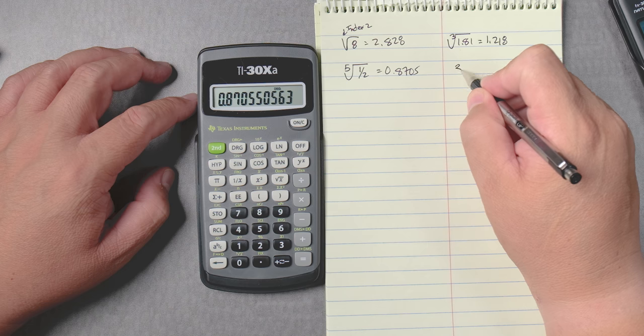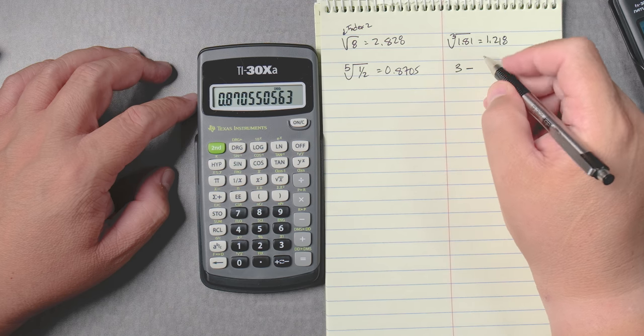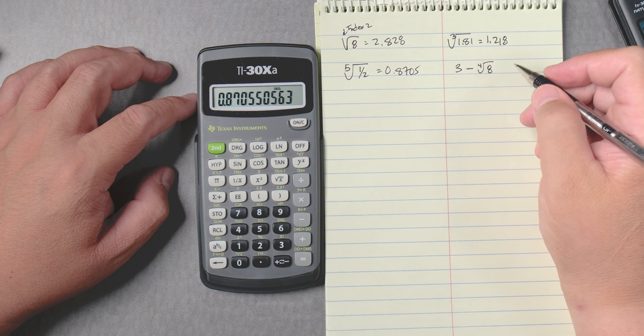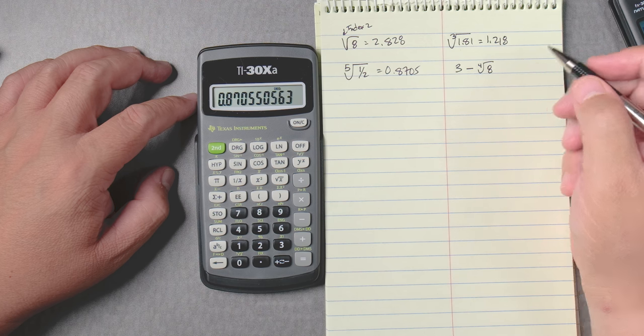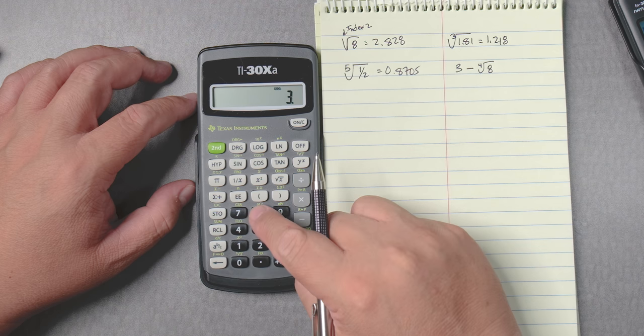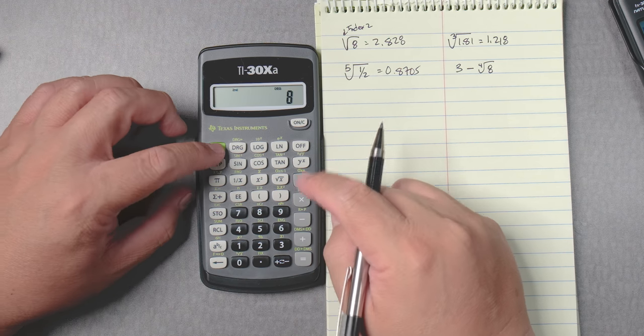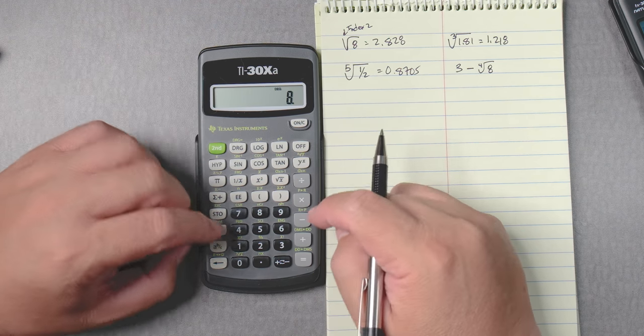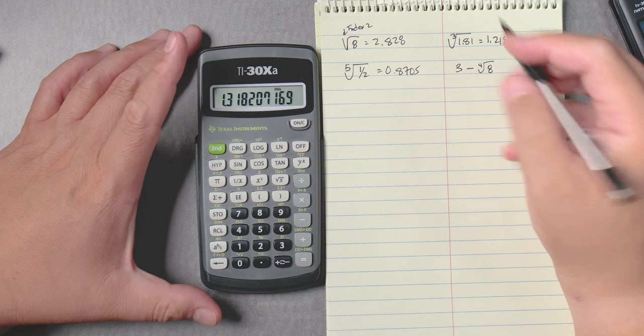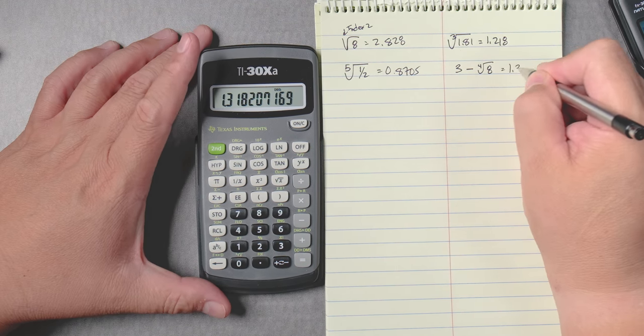Sometimes you have to do a little bit more math like 3 take away the fourth root of 8. In this case it's going to be 3 take away, 8 second y to the x, 4 equals and you get an answer of 1.3182.